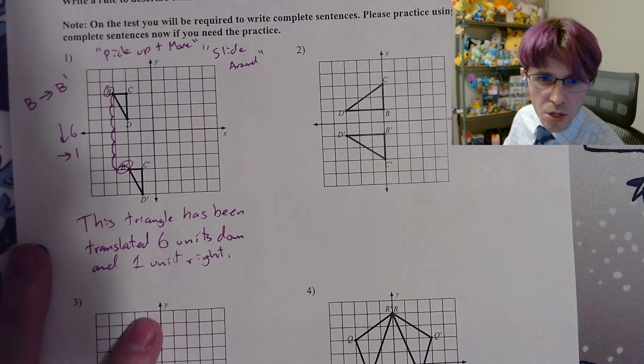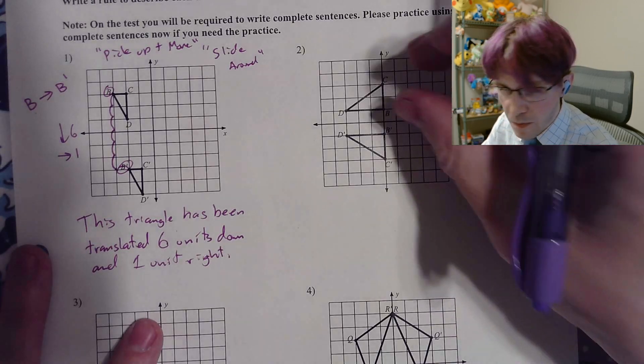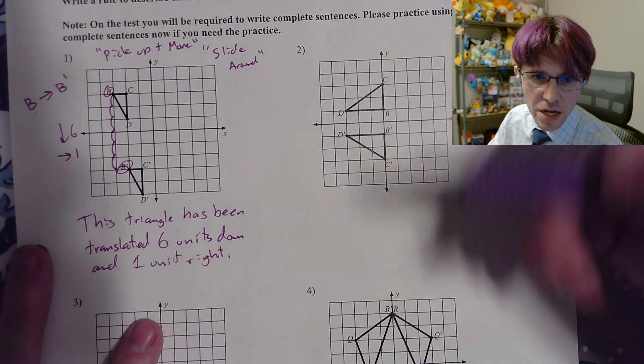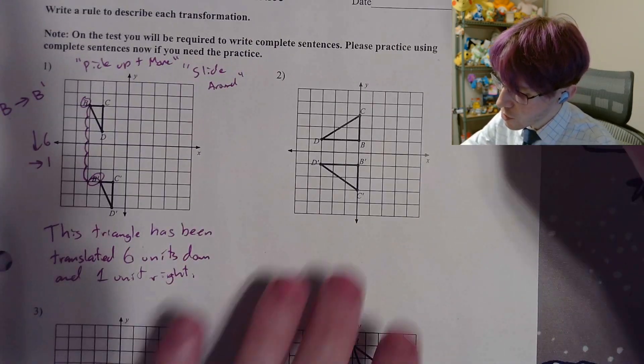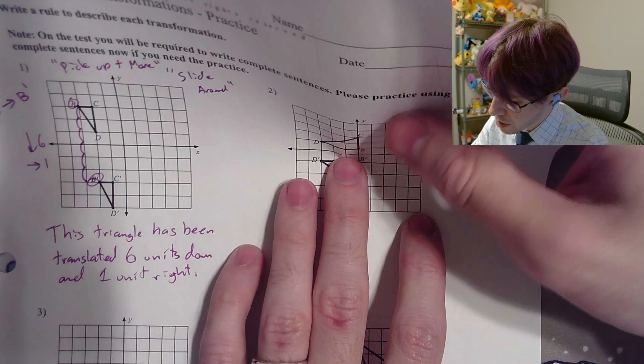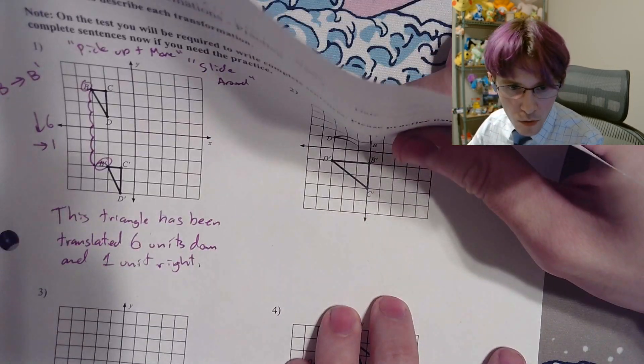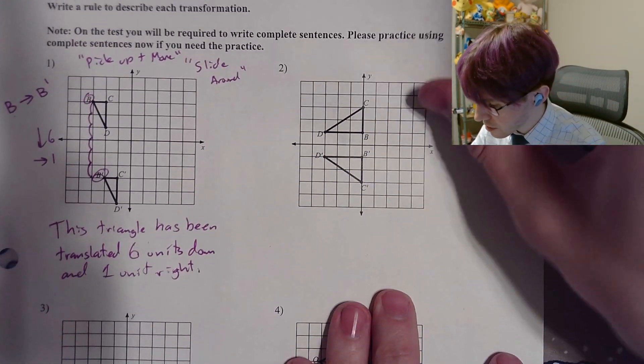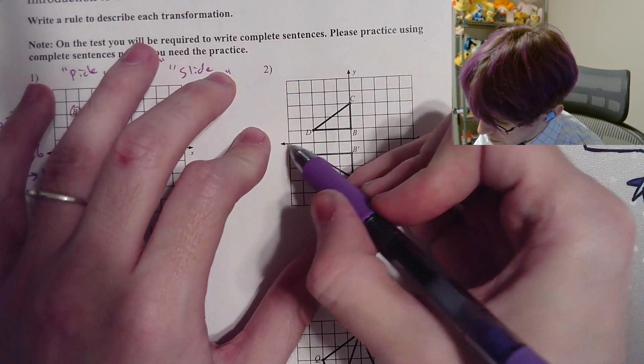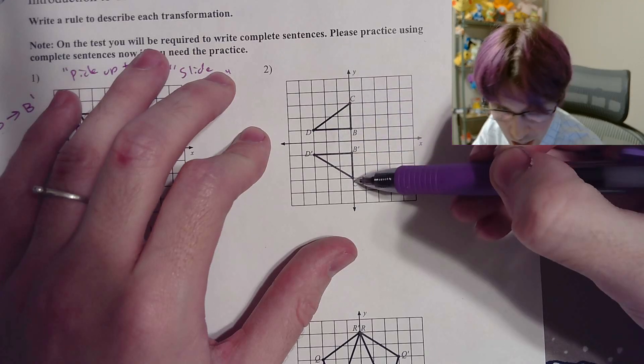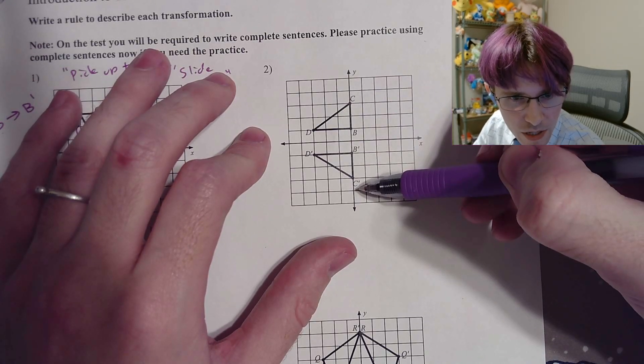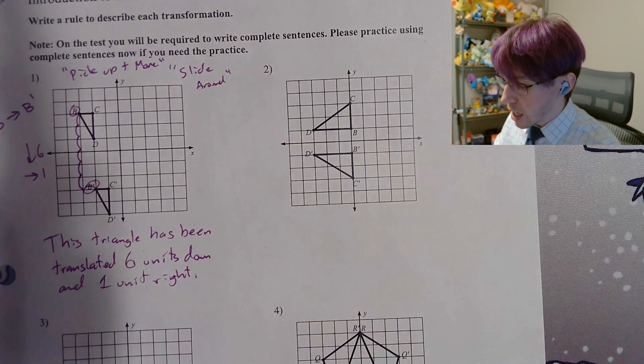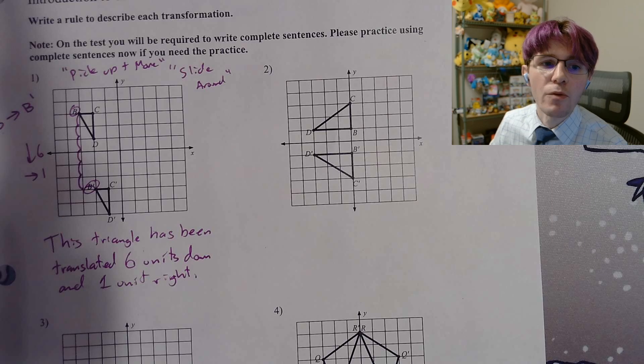We're going on to question number two. So this one, if you notice, I can't just say I picked it up and moved it. I can't say that I slid it around because it's like upside down from where it was before. If you wanted to, you could actually fold the paper up. And if you folded the paper right on top, I don't know if you can even see from in between. It's kind of too hard to see on the video. But the main idea is if I folded on top of this line here and I folded it down, this C would be on top of this C, this B would be on top of this B prime, this D would be on top of this D prime. And because of that, we call that a reflection.